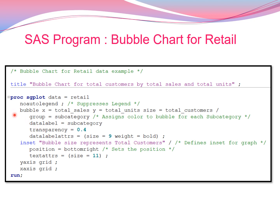Group, datalabel, transparency, and datalabel attributes are the advanced options that can be used in the bubble statement. If I want to define an inset for the graph, I will use the inset statement.